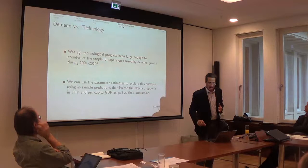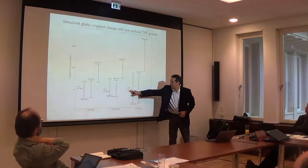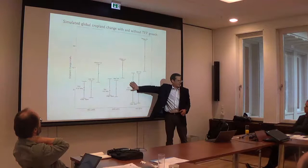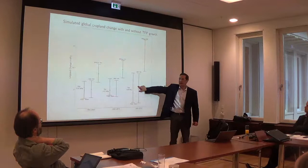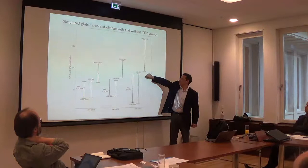And we can use these parameter estimates for a counterfactual. And what I do here is basically, this is what we observed in the 20 years, 8.46 million hectares. This is a prediction of the model, centered around zero. Statistically there was no change there. This is only TFP and demand, so pretty close to what we observed. And here we shut down any growth in TFP, this is just demand.